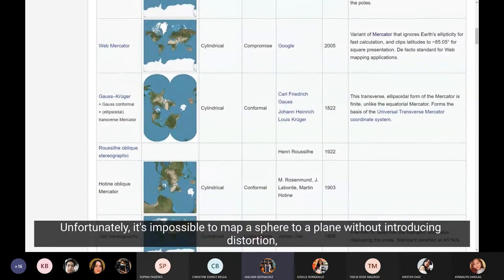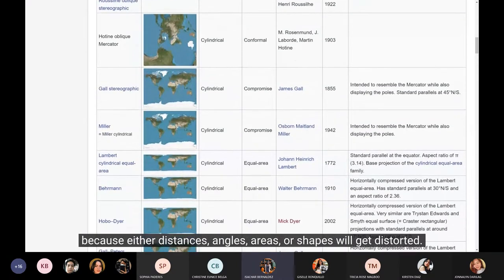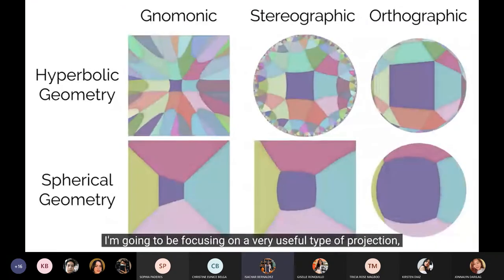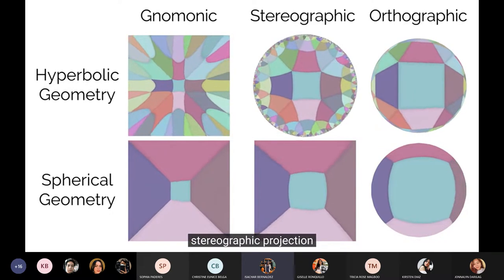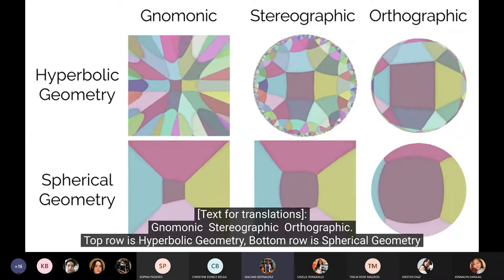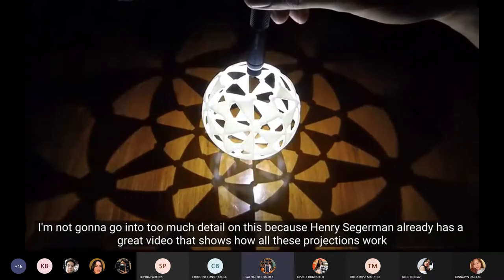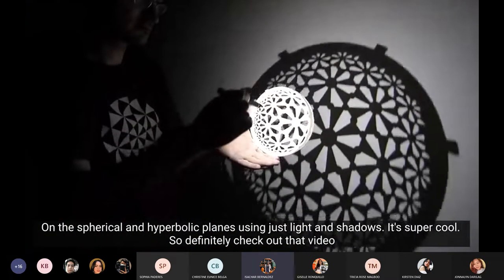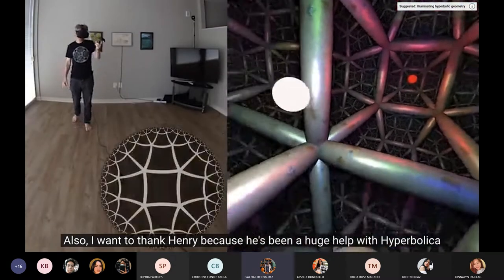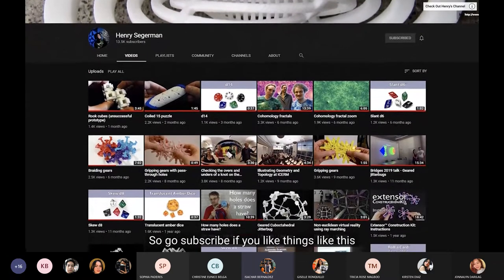Greenland and Africa look about the same size here, but Africa is actually 14 times larger. Unfortunately, it's impossible to map a sphere to a plane without introducing distortion. And that's why there's hundreds of different projections. Because either distances, angles, areas, or shapes will get distorted. And which compromise you want depends on the application. I'm going to be focusing on a very useful type of projection. Stereographic projection. I'm not going to go into too much detail on this. Because Henry Segerman already has a great video that shows how all these projections work on the spherical and hyperbolic planes using just light and shadows.